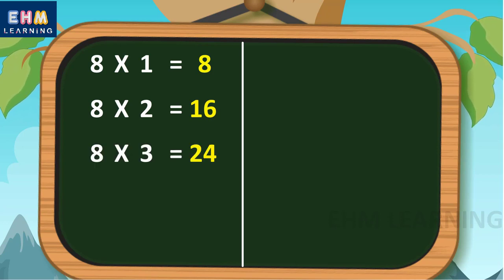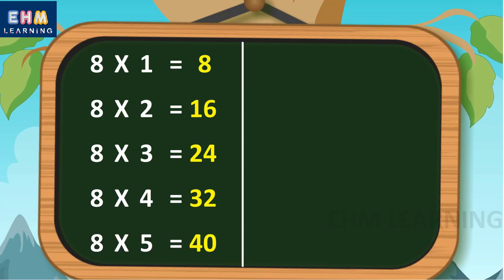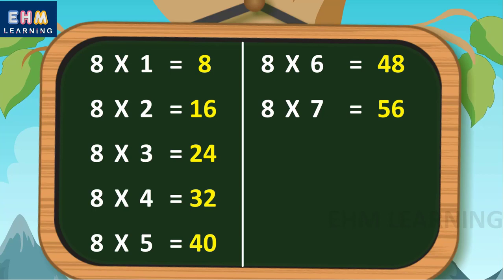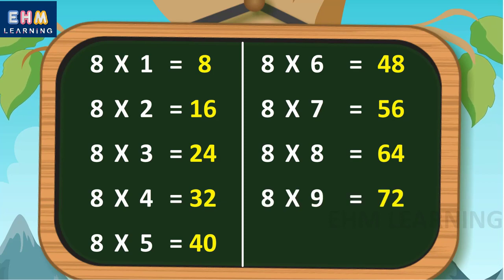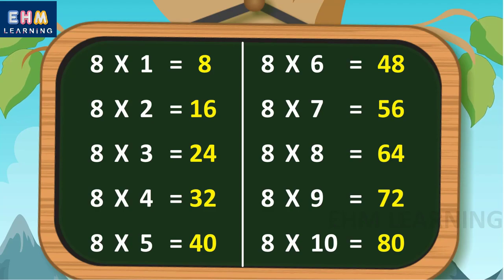Eight ones are eight, eight twos are sixteen, eight threes are twenty-four, eight fours are thirty-two, eight fives are forty, eight sixes are forty-eight, eight sevens are fifty-six, eight eights are sixty-four, eight nines are seventy-two, eight tens are eighty.